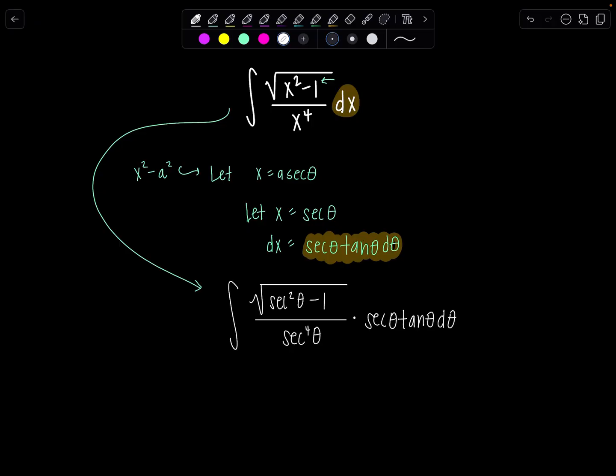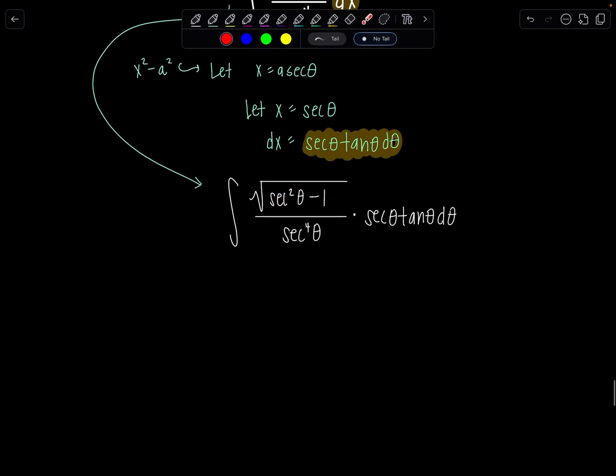Lovely. Now the whole point of trig sub is so that you can use a Pythagorean identity to simplify this expression. So secant squared theta minus one I'm going to replace that with tan squared theta underneath the radical